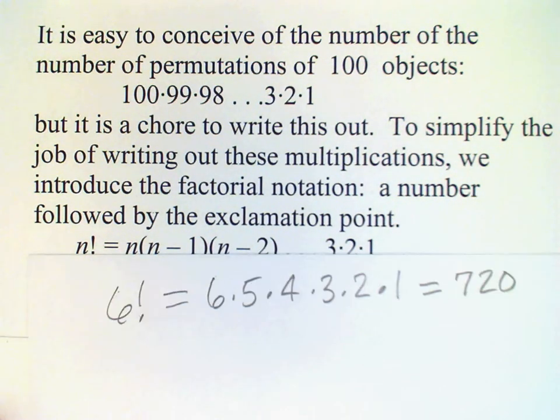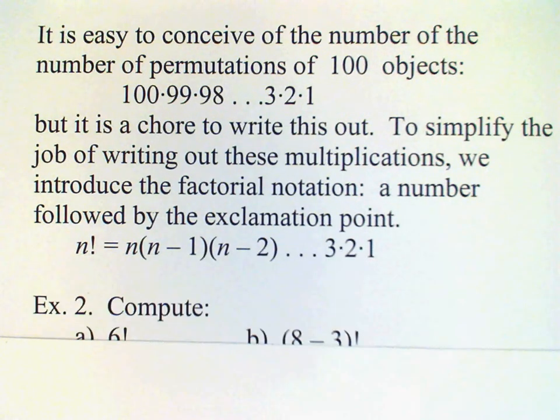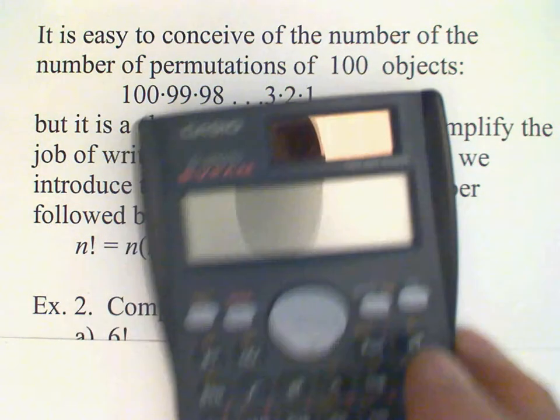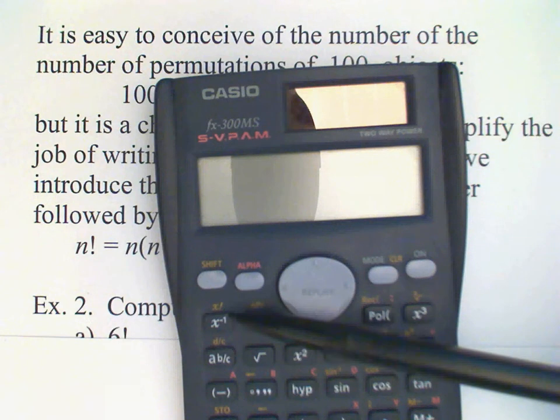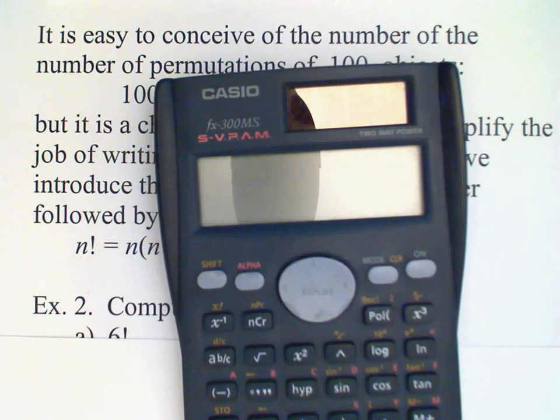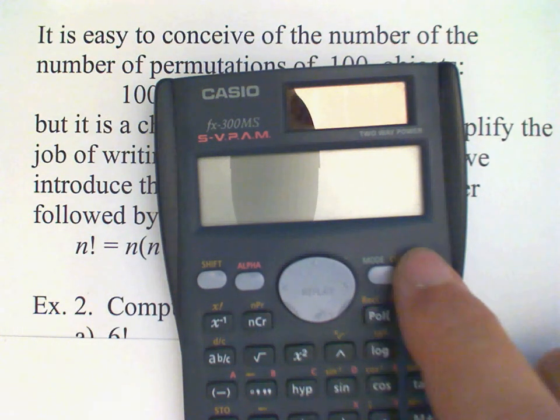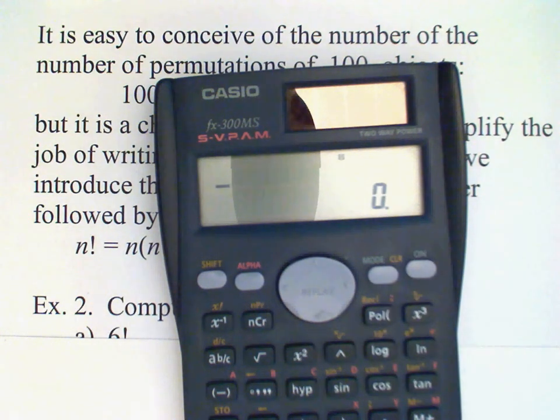Now I'd like to point out on your scientific calculator, and for example, on my little Casio here, I do have a special key. You may just be able to see it there which says x factorial. So if I need to compute six factorial on my calculator, I can do that real quick using that feature.